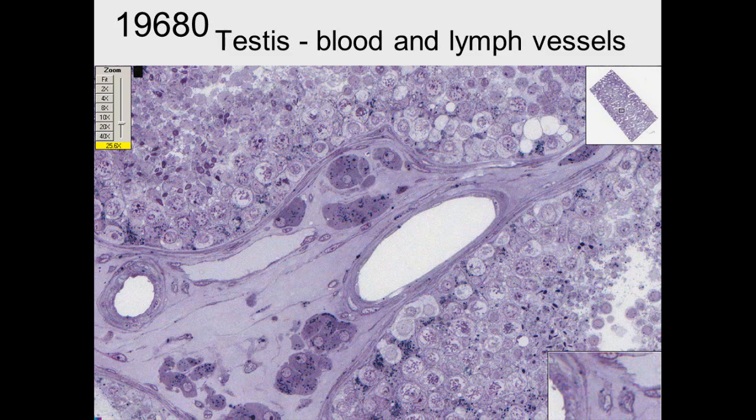The Leydig cells have a very big nucleus with a very big nucleolus. And in this case, we see there's some granularity in there. There are some lipid that's stored in these Leydig cells.